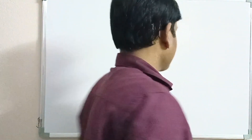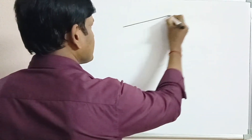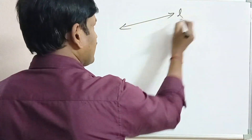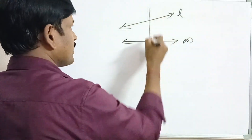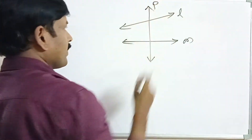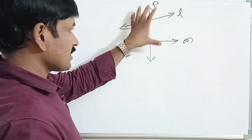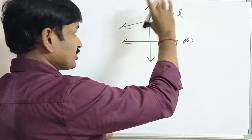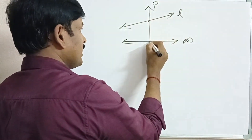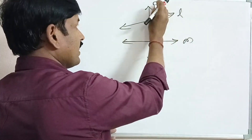What is a transversal? A line which intersects two or more lines at distinct points is called a transversal. Here, observe this — line L and another line M are both intersected by line P. So P is a transversal to lines L and M.